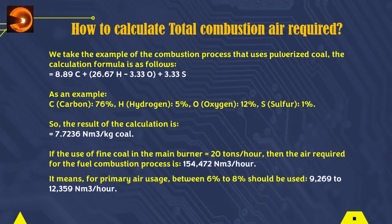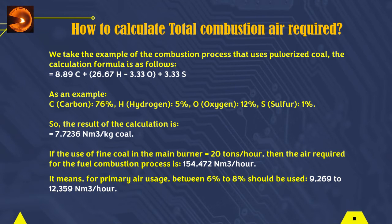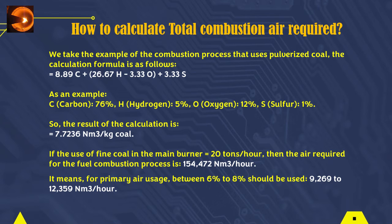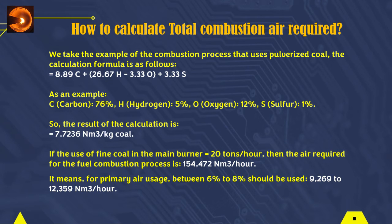We take the example of the combustion process that uses pulverized coal. The calculation formula is as follows: equals 8.89C plus 26.67H minus 3.33O plus 3.33S. As an example: C (carbon) = 76%, H (hydrogen) = 5%, O (oxygen) = 12%, S (sulfur) = 1%. The result of the calculation equals 7.7236 normal meter cubic per kilogram of coal.